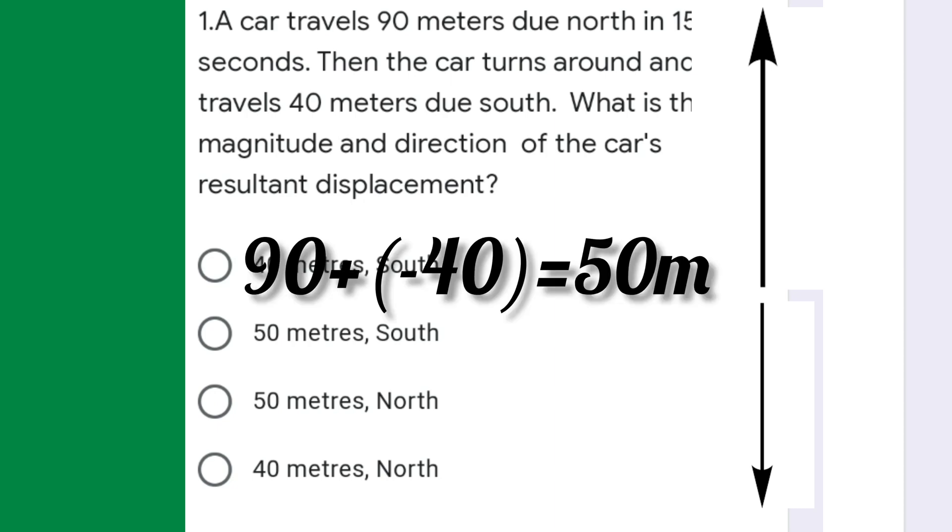When we add both the displacements, it will be 90 plus minus 40, so the answer will be 50 meters due north. That will be the answer for this question.